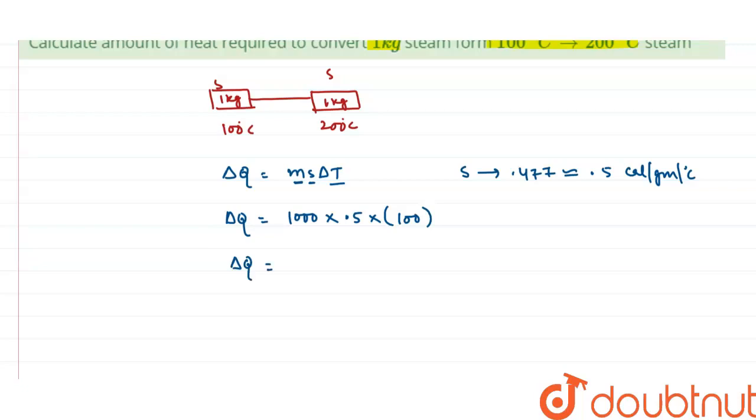And after solving this, finally we have the heat required for this process, and this is equal to 0.5 into 10 to the power 5, and I can also write this as 5 into 10 to the power 4 calorie.